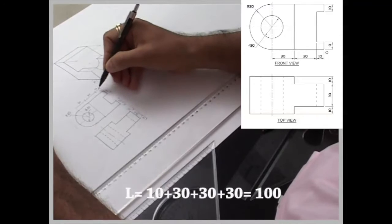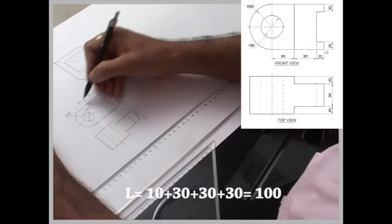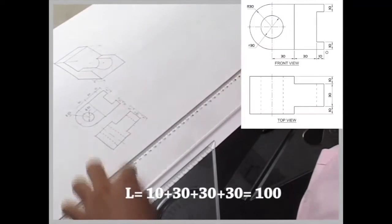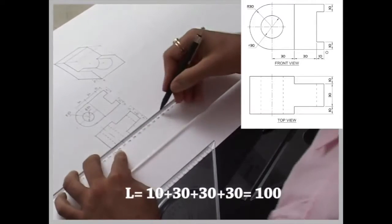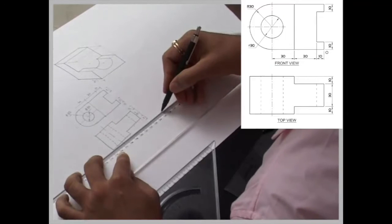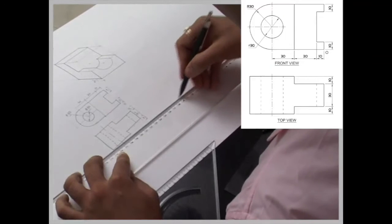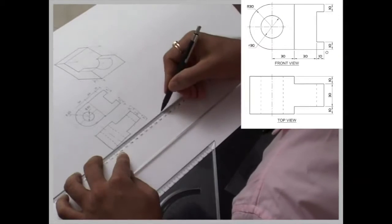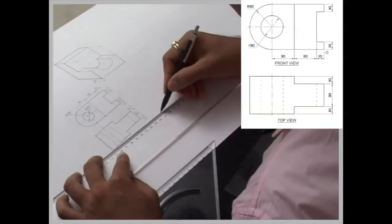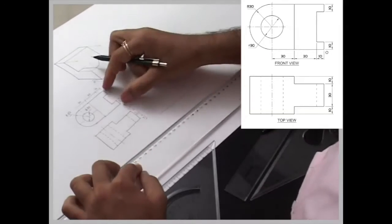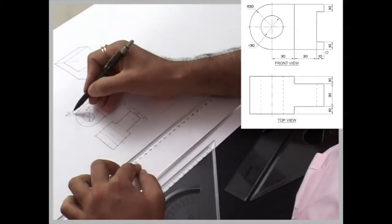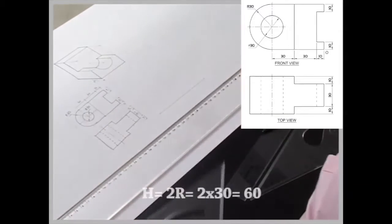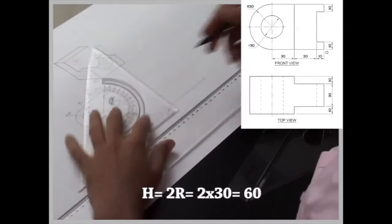So length is how much? 10 plus 30 plus 30 plus 30, so that would be 100. Height is 30 radius, so height will be 60.